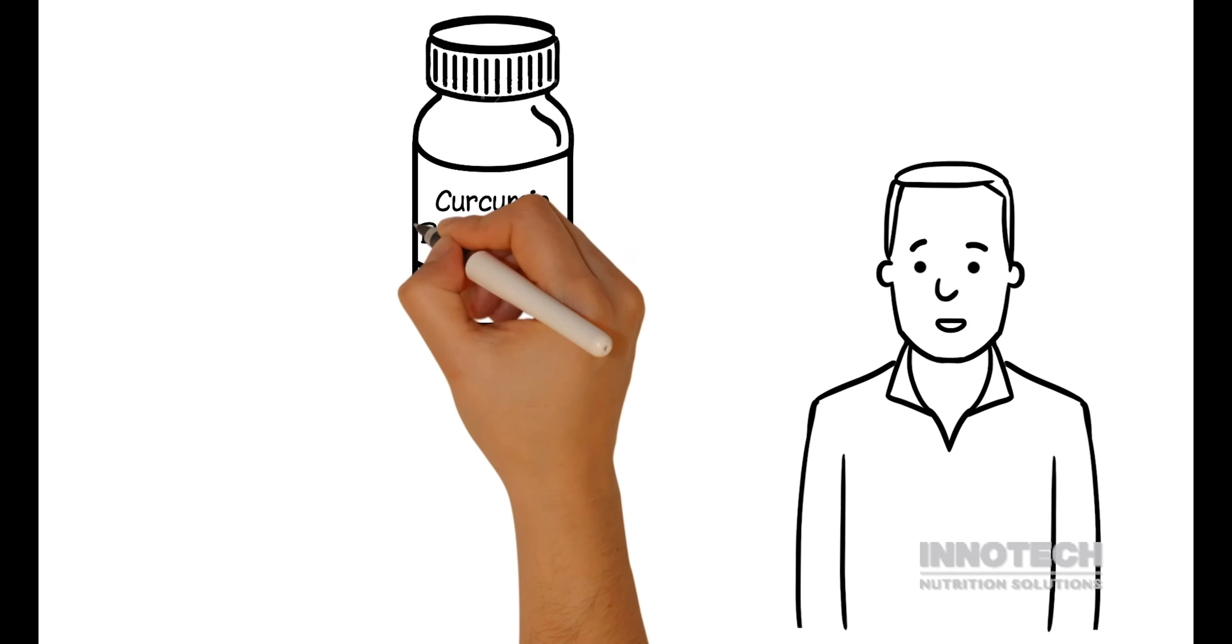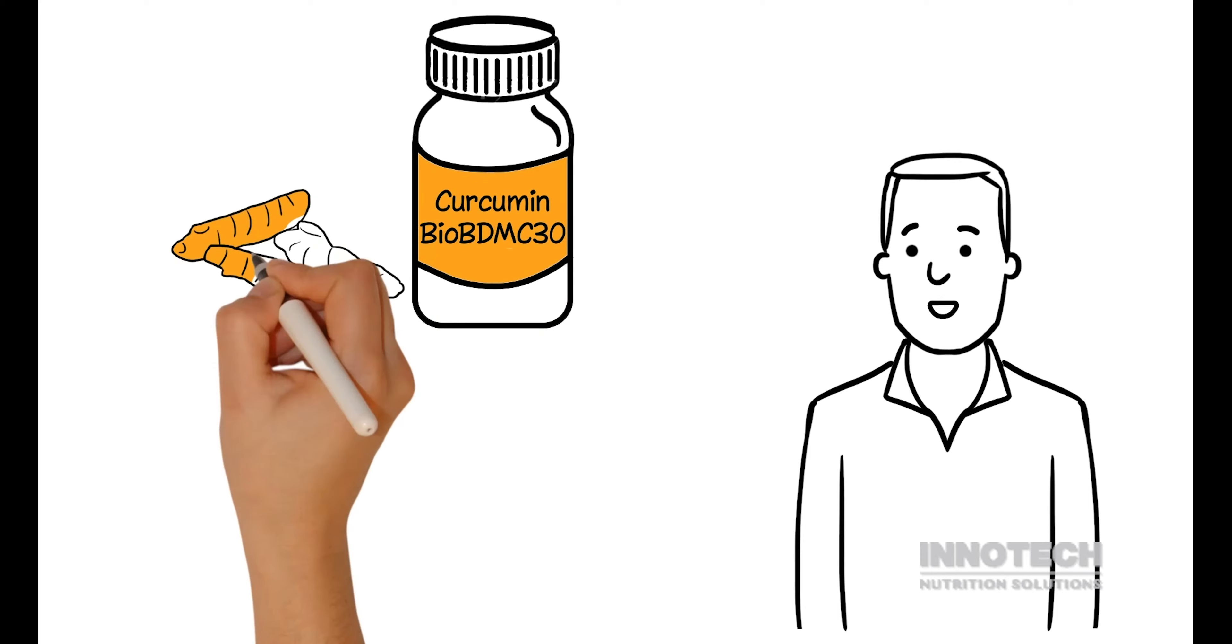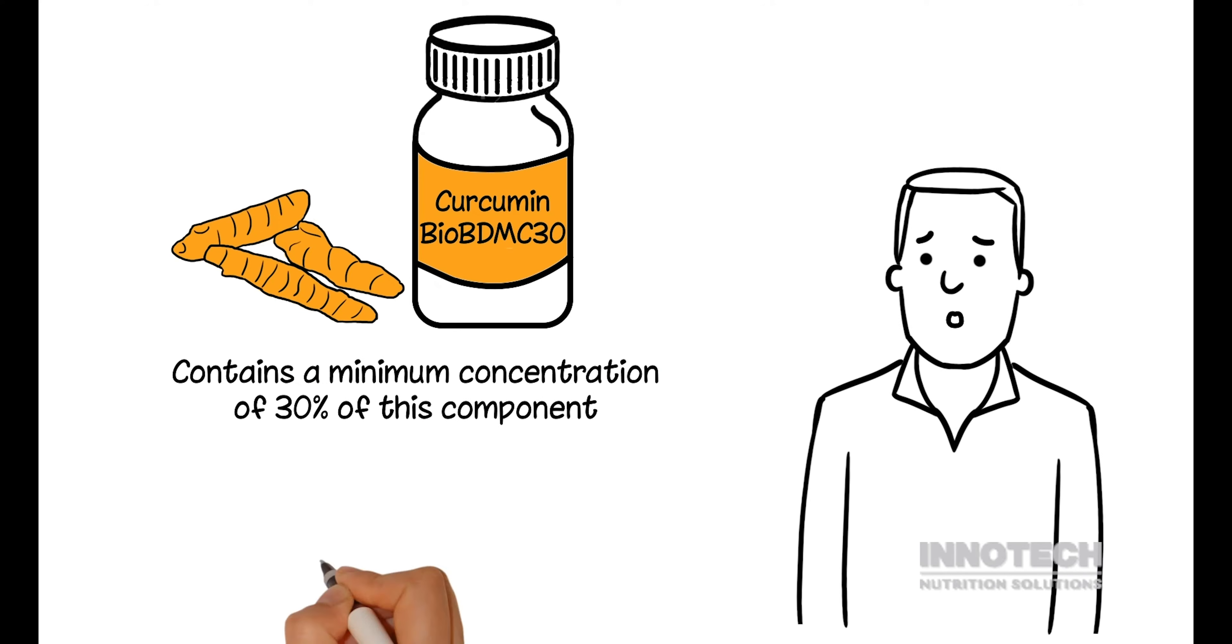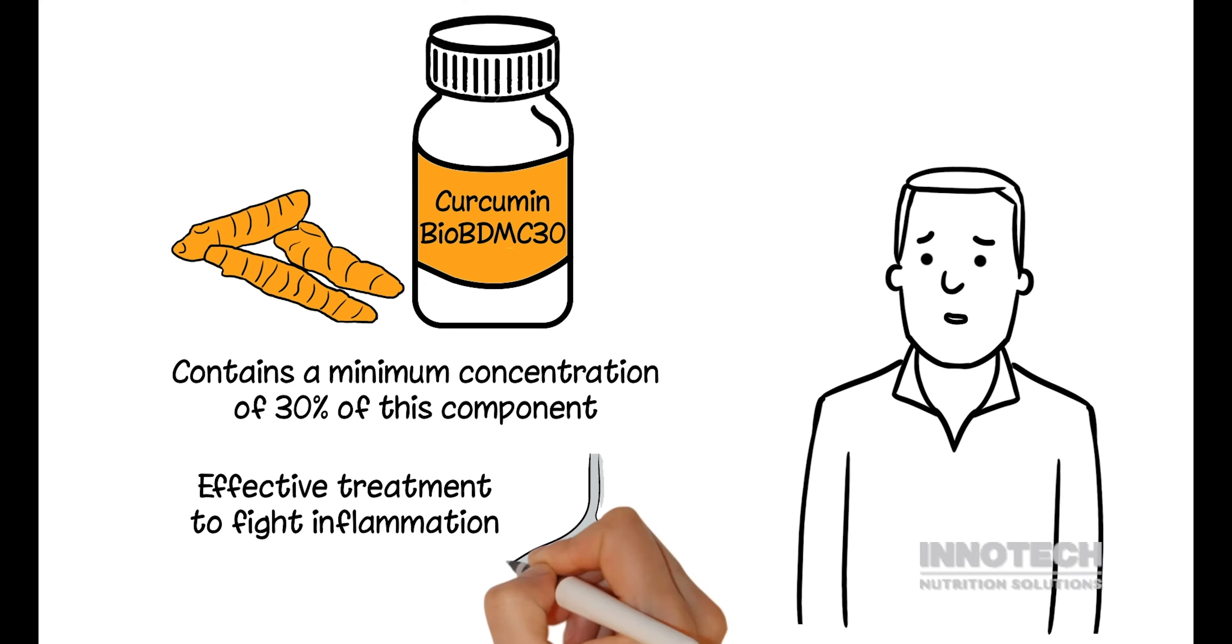The patented Curcumin BioBDMC contains a minimum concentration of 30% of this component, which makes it an effective treatment to fight inflammation in a way that's very different from regular curcumin.